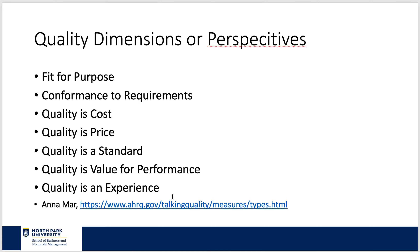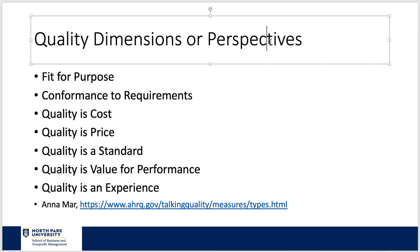If we talk about quality dimensions or perspectives, there was an interesting article by Anna Marr. She talks about these dimensions: Is it fit for the purpose — does a product or service fit the purpose it was intended? Does it conform to requirements? Quality is certainly a cost — every time you inspect something, rework something, or scrap something for bad quality, there's a cost involved. Quality is a price: if it costs you less to produce a high-quality item than someone else's poor-quality item, you can charge less and provide a better product. This is exactly what the Japanese did to U.S. auto manufacturers in the 1970s.